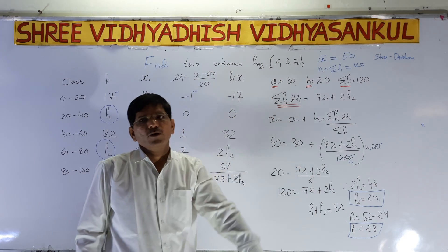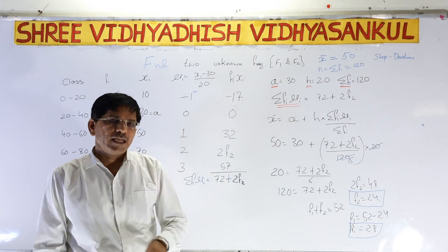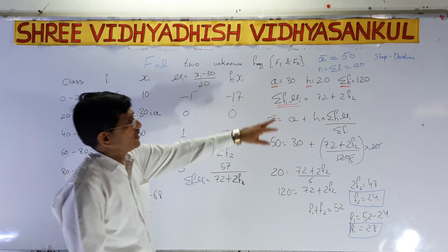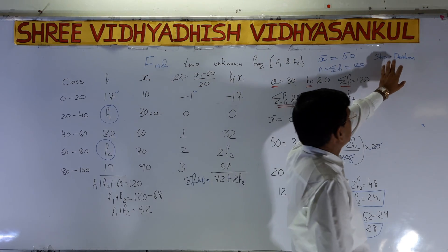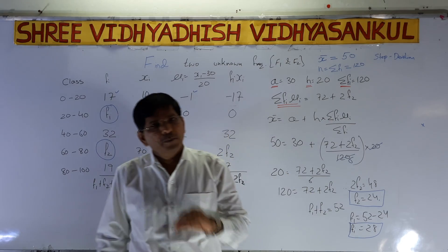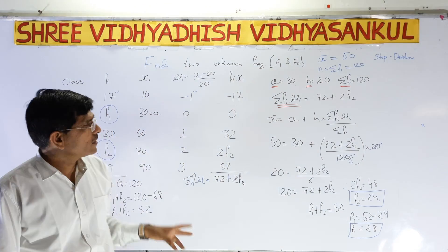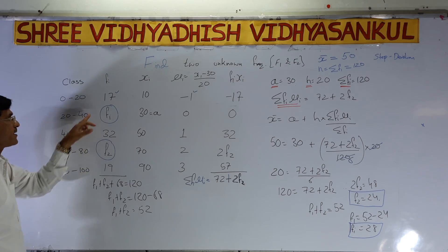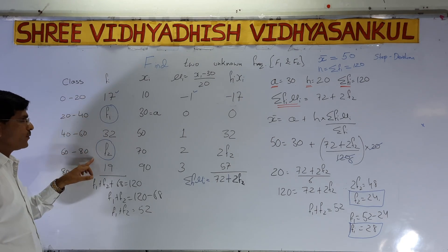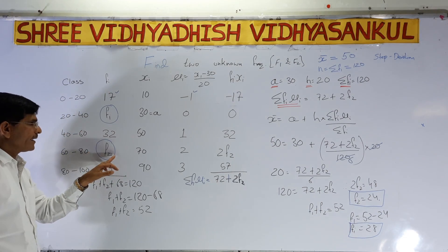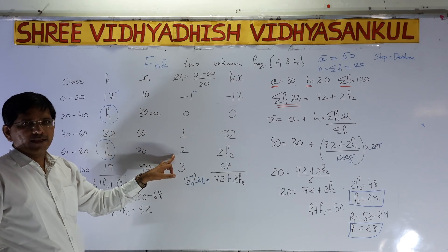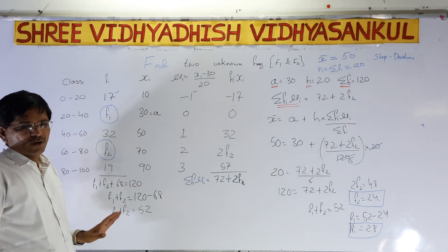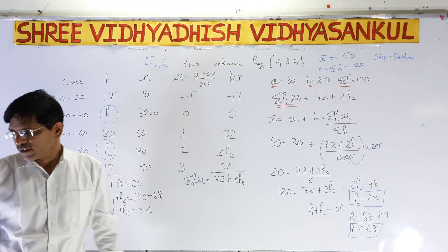To summarize: we are finding two unknown frequencies f1 and f2. The best method to use is the step deviation method. Whenever unknown frequencies f1 and f2 are present, take A from xi at the position where either f1 or f2 is — that is the key point.